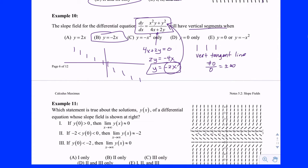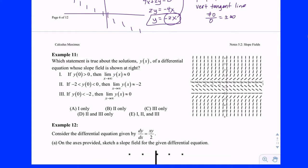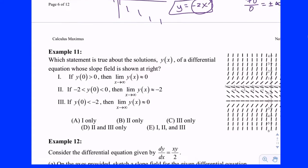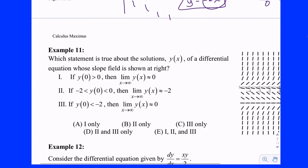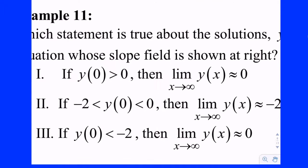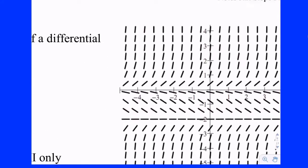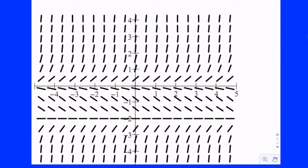Example 11 — another multiple multiple choice question. Which statement is true about the solutions y of x of a differential equation whose slope field is shown? We'll take these one at a time. Statement 1: if y(0) is greater than zero — meaning when x is zero and y values are positive — then the limit as x goes to infinity is zero. If you drop in at any particular solution along that line and head out to the right, are y values getting closer to zero?